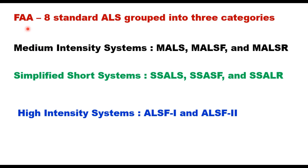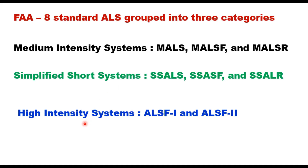FAA has standardized approach lighting systems into eight standards grouped in three categories. The first is medium intensity systems, which include MALS (medium approach light system), MALSF (medium approach light system with sequencing flashing), and MALSR (medium approach light system aligned with runway). Similarly, there are simplified short systems: SSALS, SSALSF, and SSALR. And high intensity patterns ALSF-1 and ALSF-2. Medium intensity systems are economy approach lighting aids utilizing 150-watt lamps, whereas simplified short systems are high intensity systems utilizing 300-watt lamps. The high intensity system is very expensive — the most elaborate and expensive lighting system — and can be either Group 1 or Group 2.